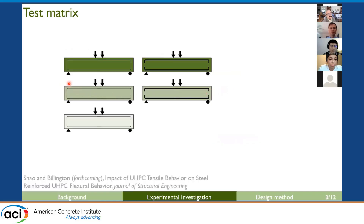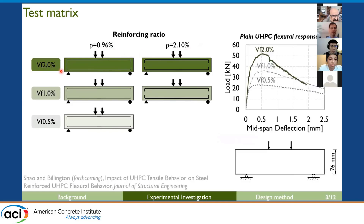Today we'll discuss experimental results from five selected beams. Each column represents one reinforcing ratio — a median reinforcing ratio of 1% and a high reinforcing ratio of around 2%. Each row represents one fiber volume: a typical high fiber volume of 2% and two lower fiber volume options. The right figure shows load-deflection responses from unreinforced UHPC beam tests with these three different fiber volumes. As we can see, when fiber volume reduces, the flexural capacity of the unreinforced beam also reduces.